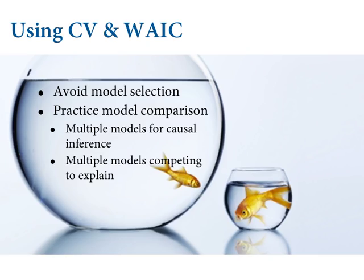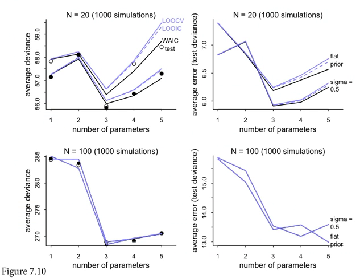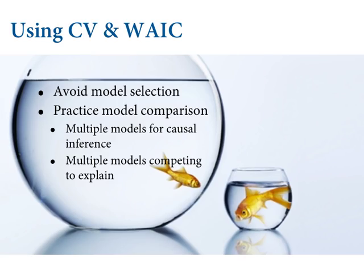On underfitting: yes, the models on the left are underfitting — they don't have enough parameters. If we add parameters, they do better out of sample. Model three is the best, and models one and two are underfit — they didn't learn enough from the sample and left information on the table. Models four and five are overfit, and model three is just right because it's the true data-generating process. You can never beat it.